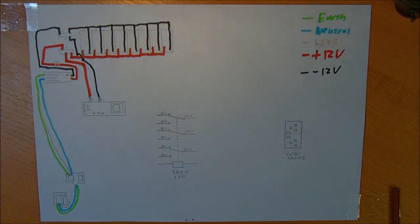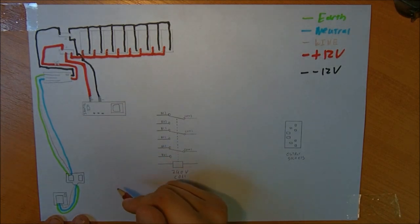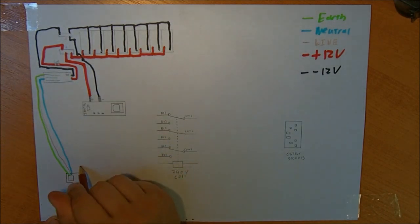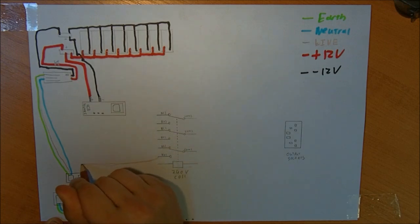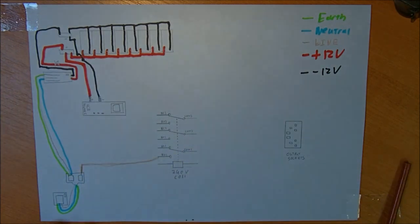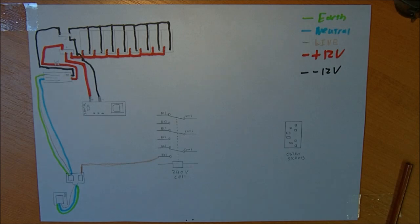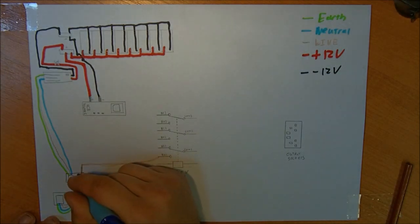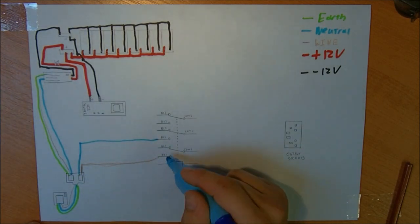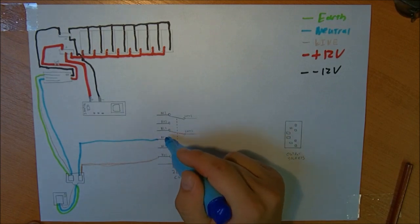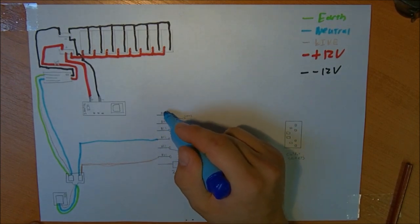We're going to connect the relay out now. So we'll have a live coming out of this bug. Into this contact here. There we go. And same with the neutral. No neutral coming out of this. So I've labelled these NO1, NC1, NO2, NC2, NO3, NC3.